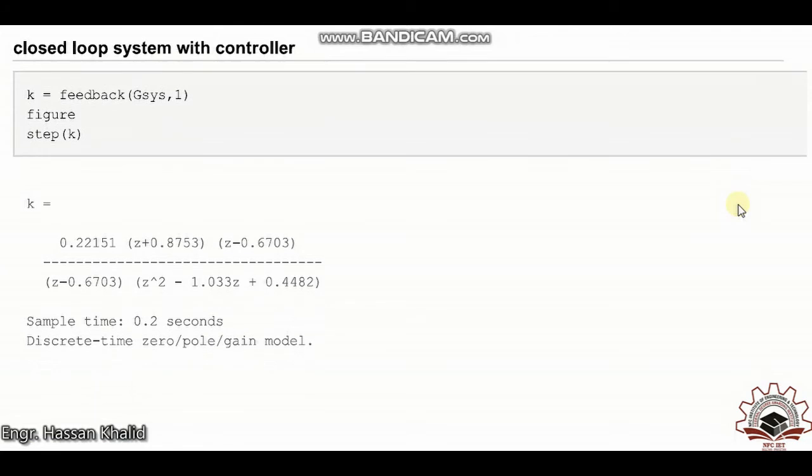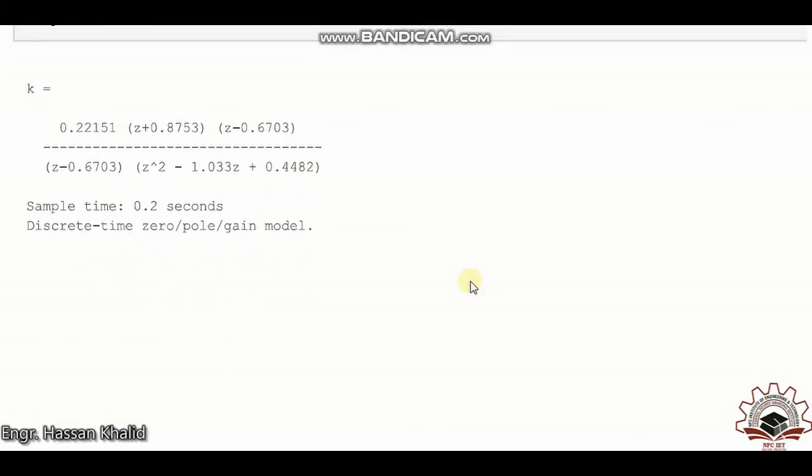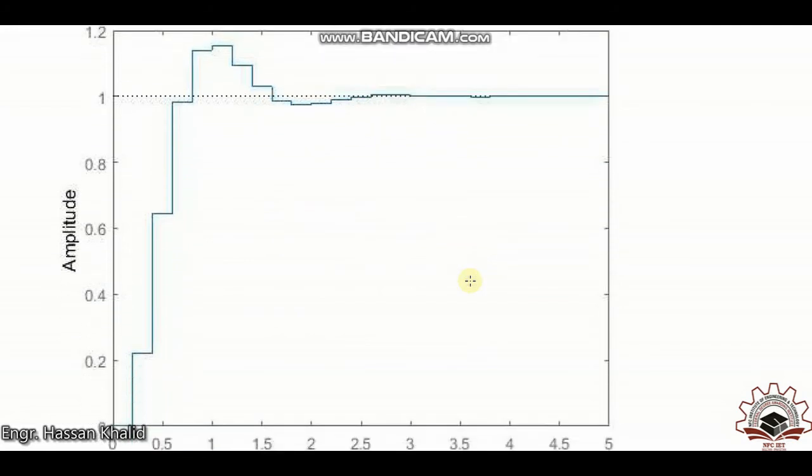Let's take the closed loop system defined by this new system and take the step response once again. Now you can easily realize that the system has undergone overshoot.